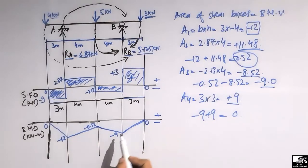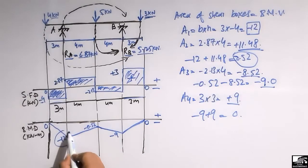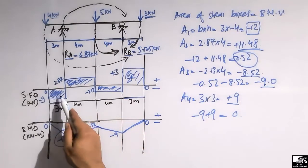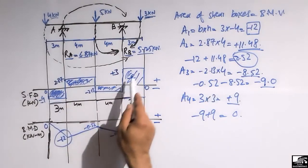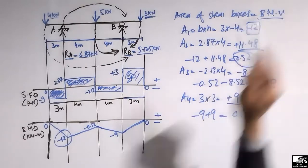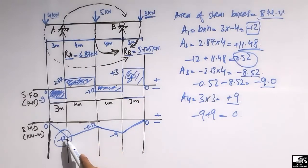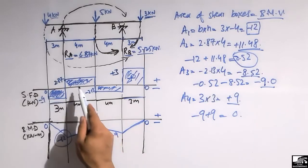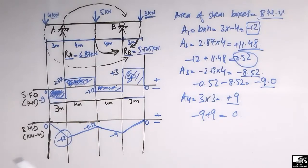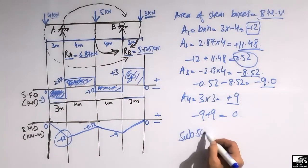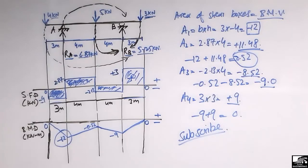The bending moment is zero at both ends of the beam, with intermediate values in between. The maximum bending moment is −12 kN·m. I hope you understand how to draw the shear force and bending moment diagram by finding the shear box values and their areas. Don't forget to subscribe to our channel for daily civil engineering videos. Thank you for watching.